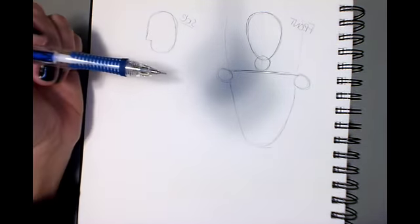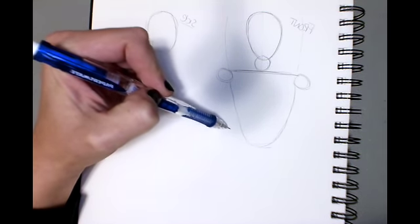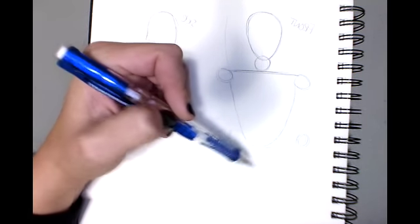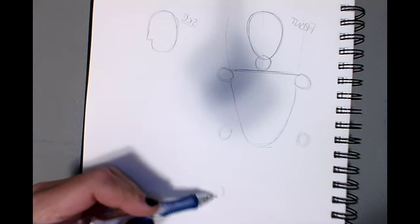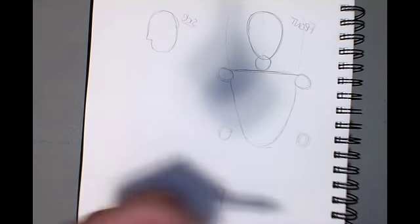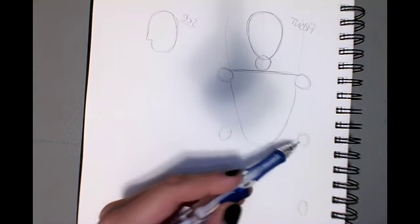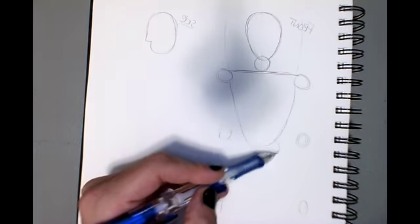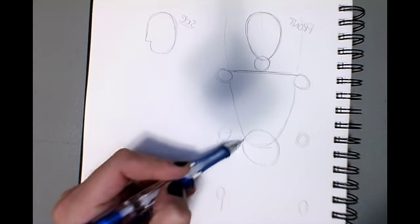Now one thing that's important to keep in mind with arms is that the elbows generally tend to be at the hips and the hands generally tend to be at the thighs. So we're going to just mark off where we think our hands are going to go. Right there for now. So we've got our elbows here.